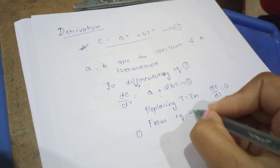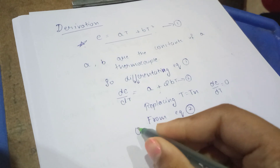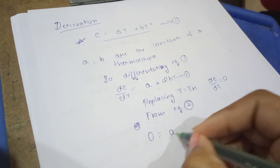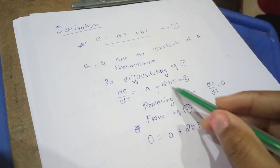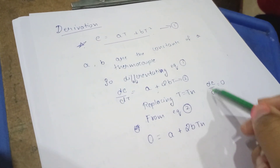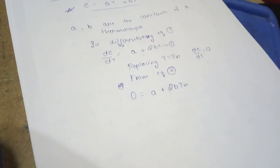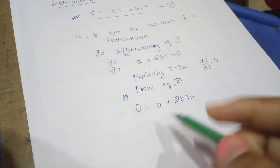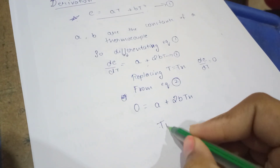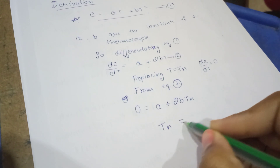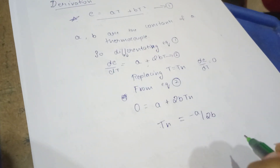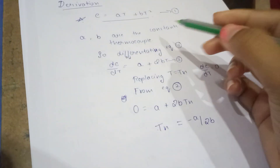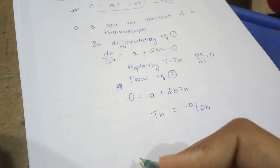From this equation, 0 = a + 2bT-N. Since T = T-N is substituted and dE/dT = 0 because E is maximum, we can rearrange to get T-N = −a / 2b.